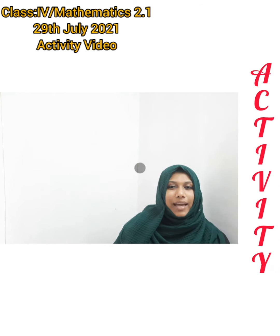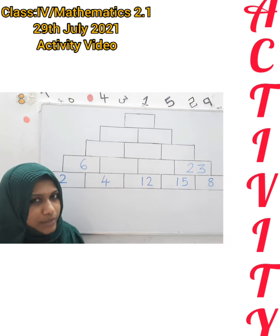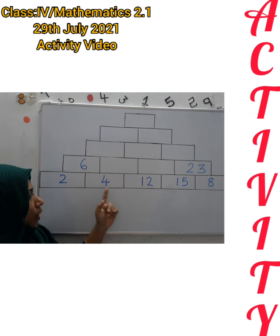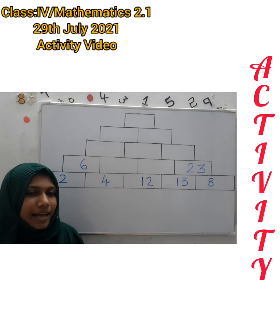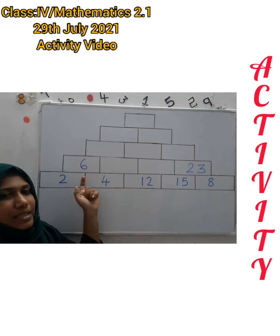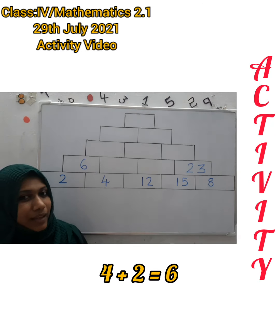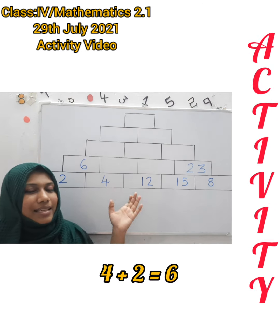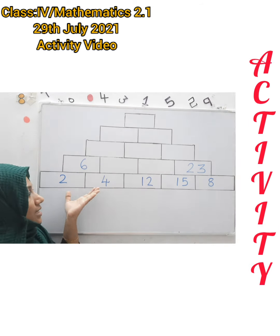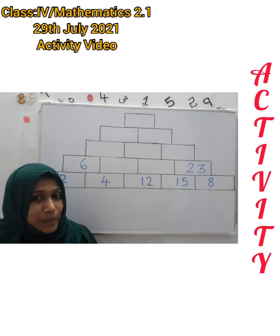We can do the activity together. Here is a pyramid for you. You can observe the pattern here. 2, 4, 12, 15, and 8 are the numbers in its last step. Then how is 6 here? 4 plus 2 is 6. So this is an addition pyramid. We have to add the steps to get the answers so that we can complete this pattern.